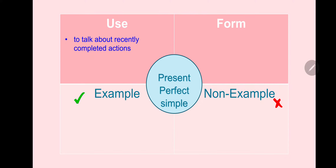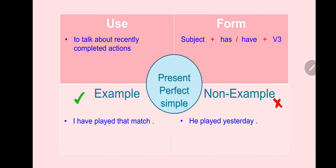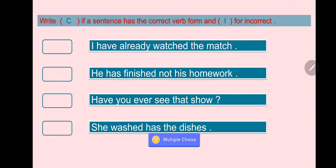Present perfect: Subject + has/have + verb 3. For example: I have played — correct. He played that yesterday — incorrect, it doesn't belong to the present perfect. Number one correct — has a subject, have, time expression 'already', and verb 3. Number two incorrect — 'not' is in the wrong place; it must come after has or have. Number three incorrect — we don't use the base form after have/has; we use verb 3, so it should be 'seen'. Number four incorrect — has must come after the subject before the verb; it should be 'She has washed.'